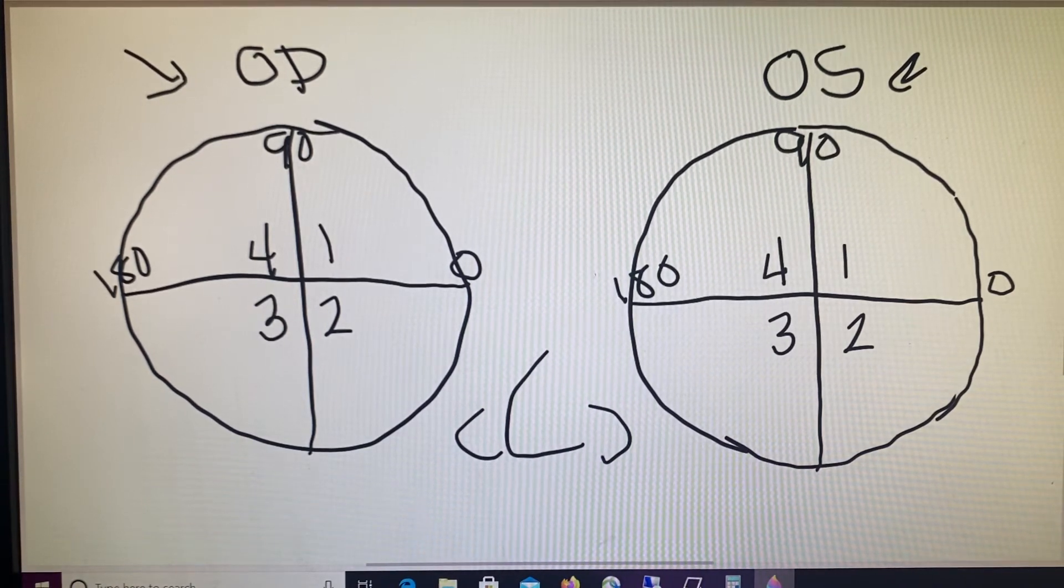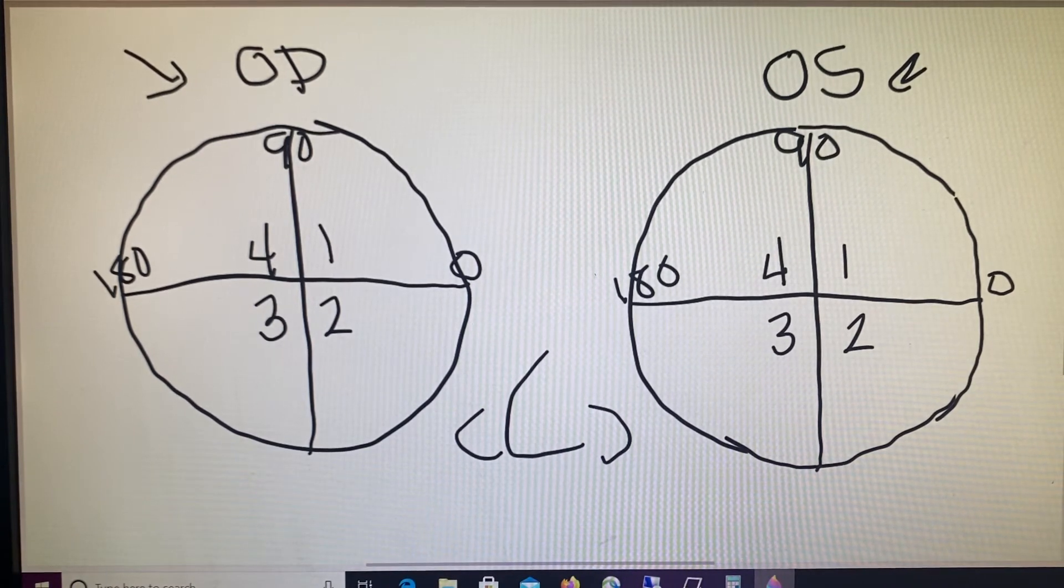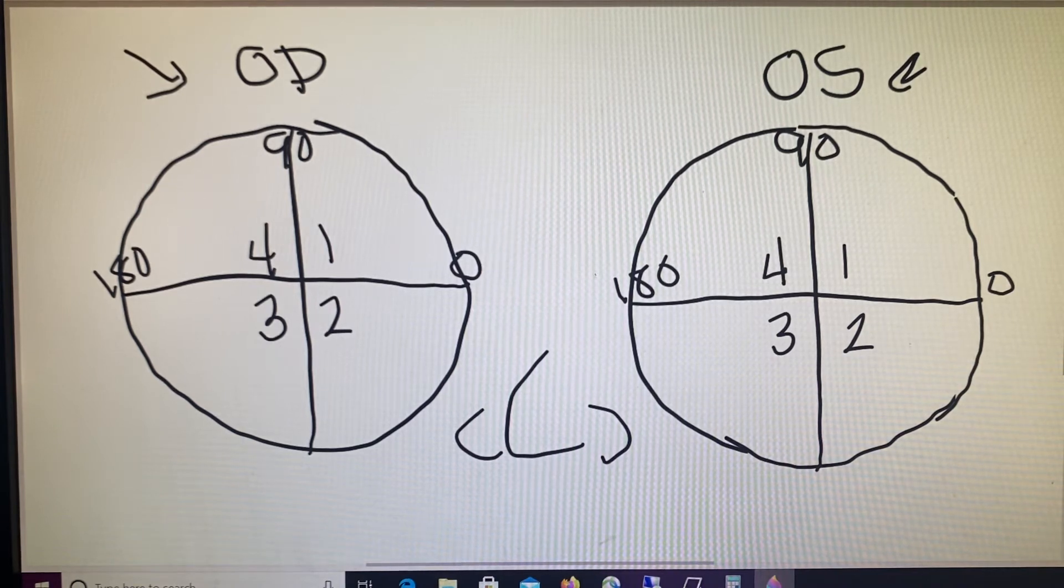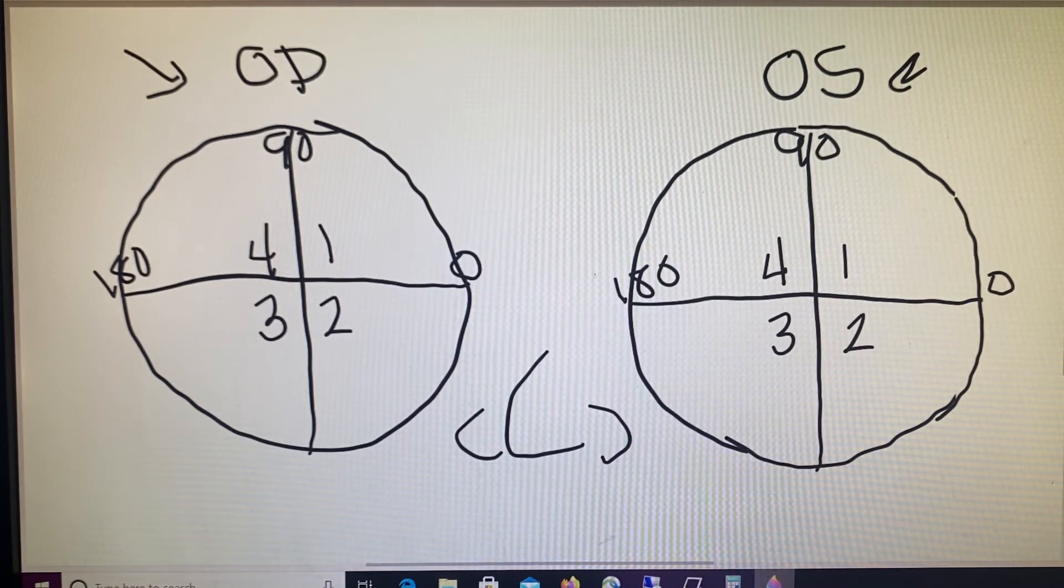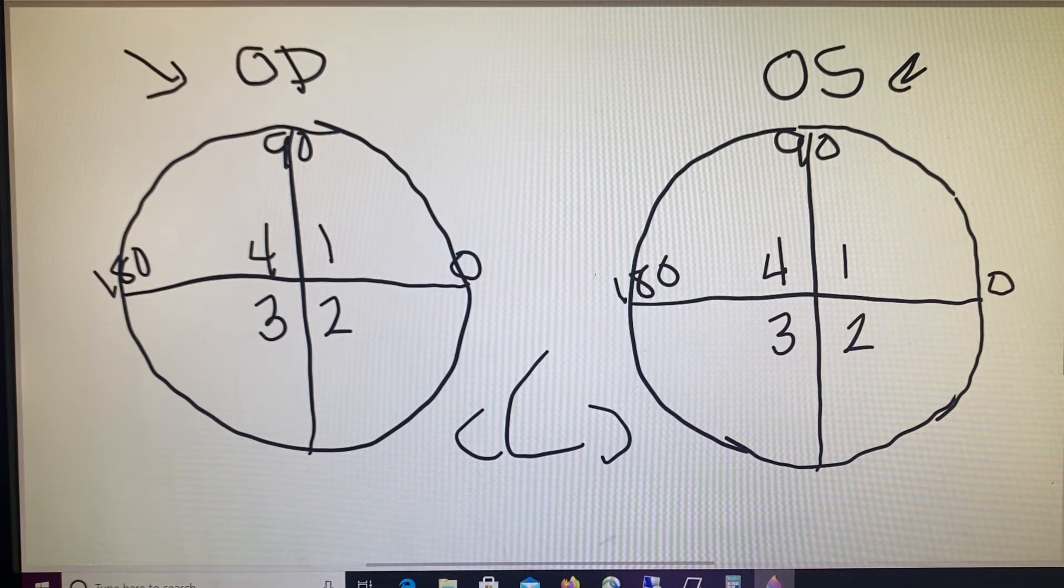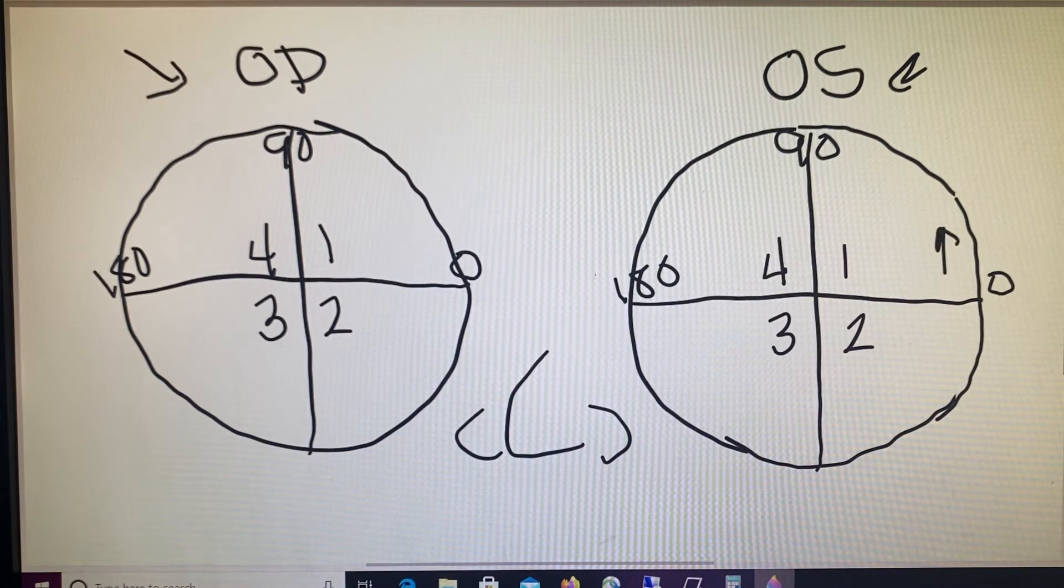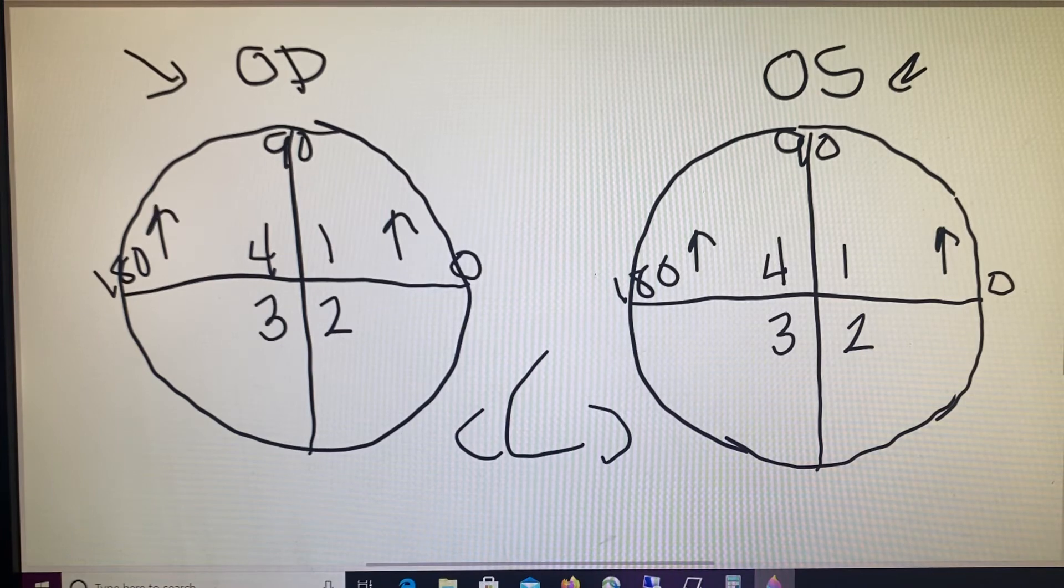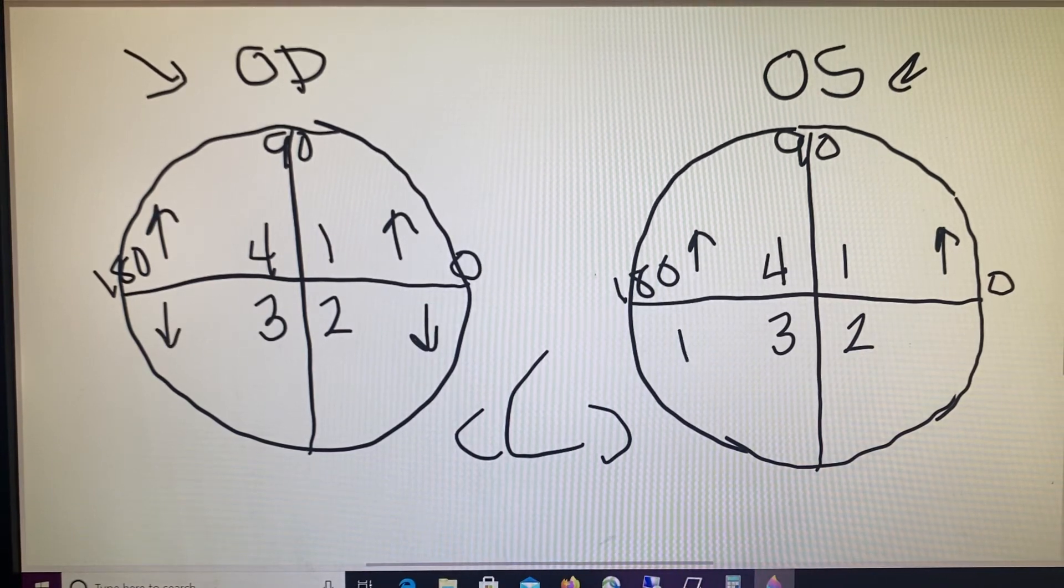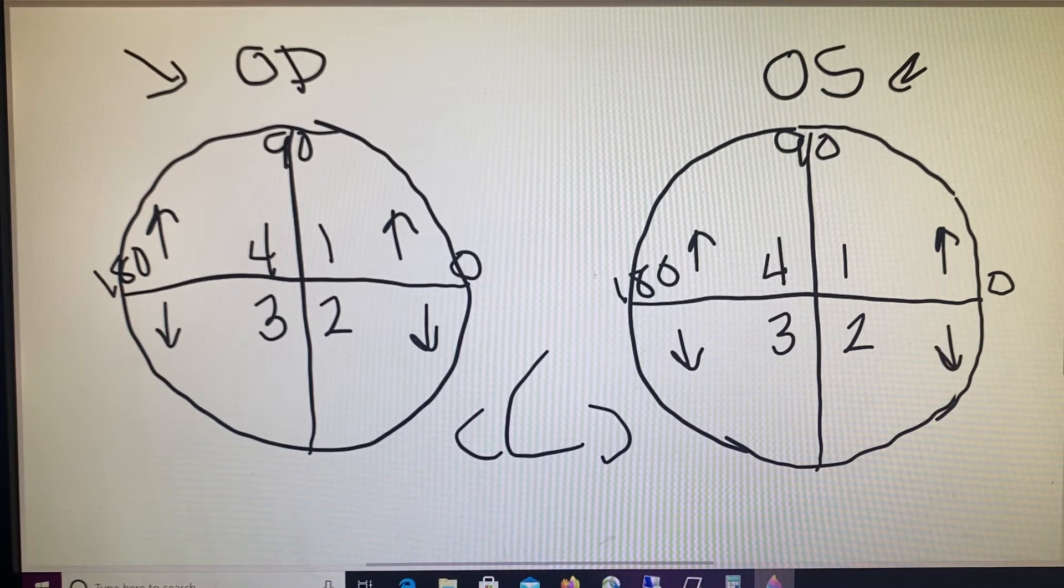We can also think about these as direction. So all four of our upper quadrants, ones and fours, are ups. And then twos and threes are down. So we have base up in both our quadrants one and four, and then base down in our quadrants two and three.